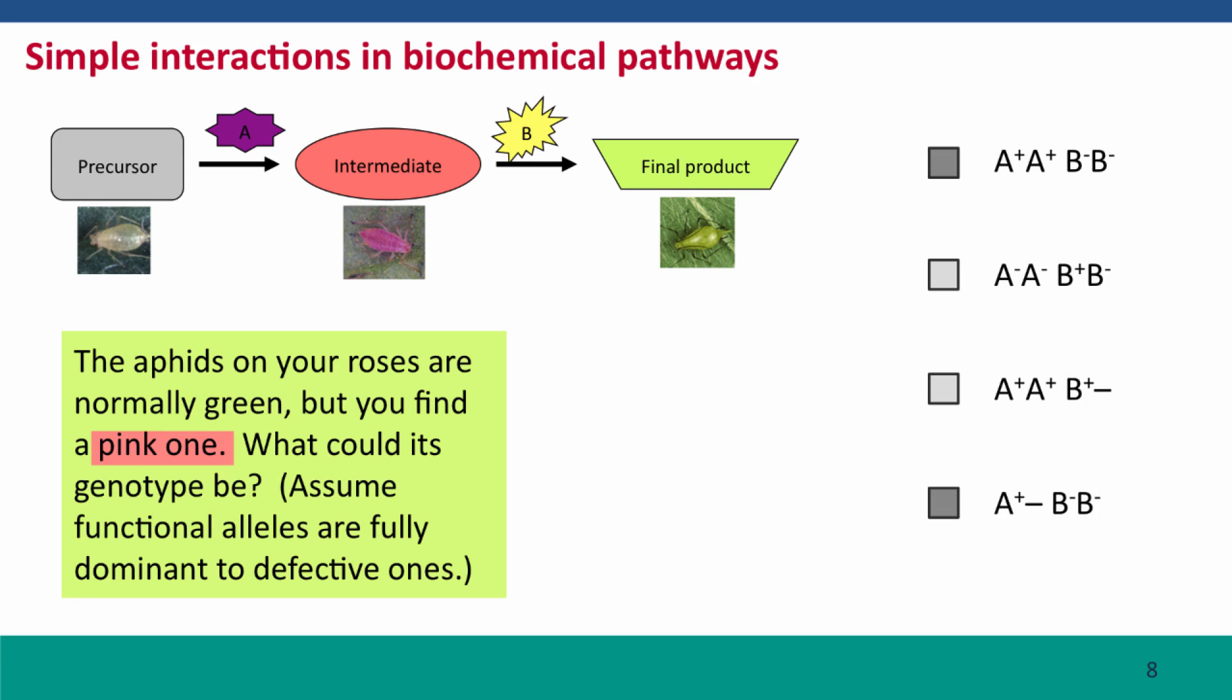So there are two answers that are right to this question, and they actually overlap in what they describe. The most comprehensive answer is this one here, that the aphid, because it's pink, must be defective in gene B. It must have two defective alleles of gene B.